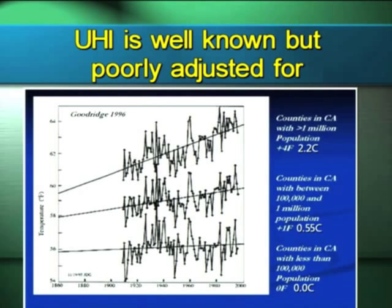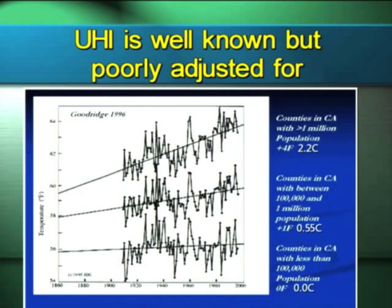James Goodridge, the former state climatologist of California, published in the Bulletin of the American Meteorological Society a paper showing three different graphs — counties in California of varying populations: over a million, around 100,000, or less than 100,000. It struck me because I thought, if CO2 were causing these temperature rises, how would it know to warm these counties differently? It's not an intelligent molecule. This was one of the first instances where UHI had been documented associated with population density.